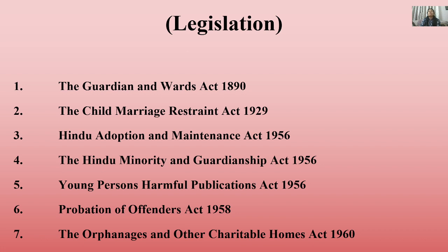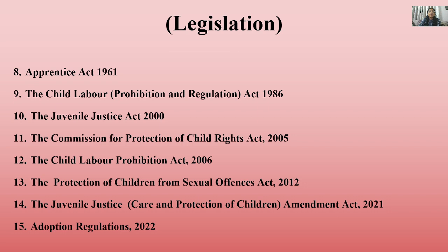The Young Persons Harmful Publications Act 1956 prevents misinformation being published for children. The Probation of Offenders Act provides concessions for those under 21 years. The Orphanages and Other Charitable Homes Act 1960, Apprentices Act 1961, Child Labour Prohibition and Regulation Act 1986, Juvenile Justice Act 2000, Commission for Protection of Child Rights Act 2005, Child Labour Prohibition Act 2006 (revised), Protection of Children from Sexual Offences Act 2012, Juvenile Justice Act 2021, and Adoption Regulations 2022 are the key legislative provisions.